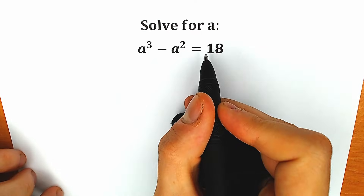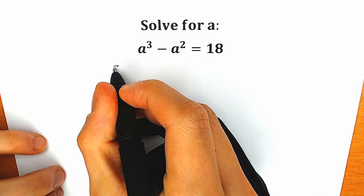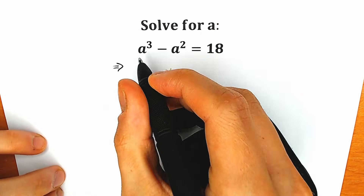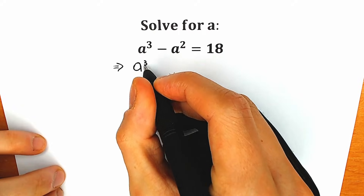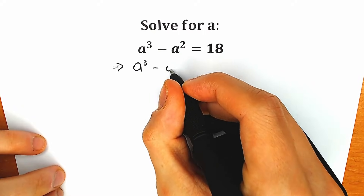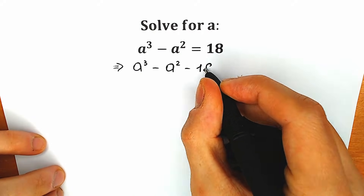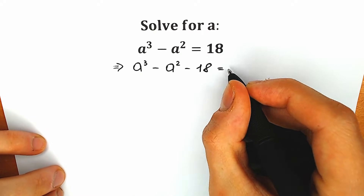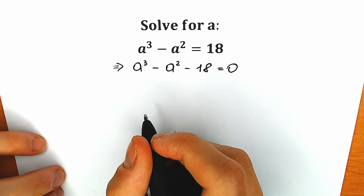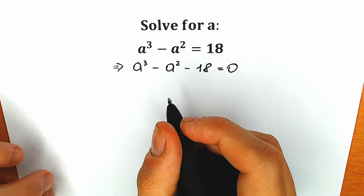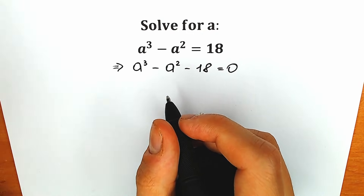First of all, let's write this 18 on the left side. So we have a³ minus a² minus 18 equal to zero. There are a lot of ways how we can solve this equation, but I'm going to show you this one.